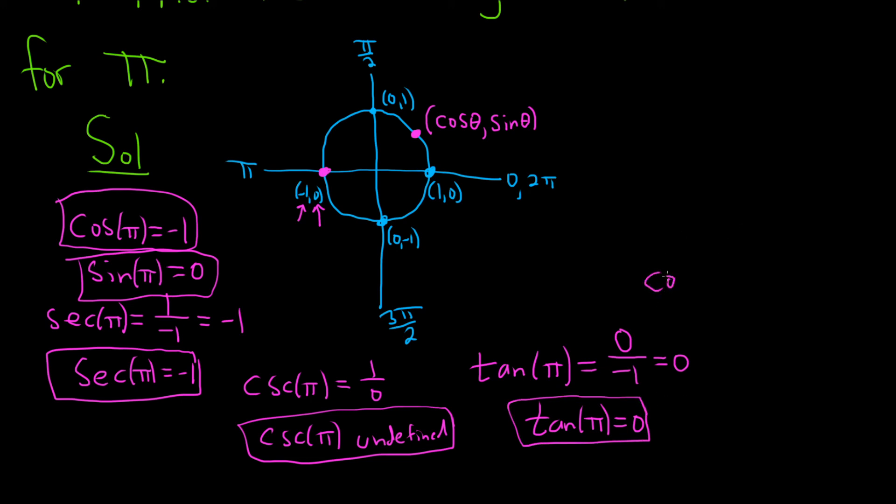And the very last one would be cotangent. So cotangent of pi, well, that's just 1 over tangent. So 1 over 0. And as before, we cannot have 0 on the bottom. So that would also be undefined.